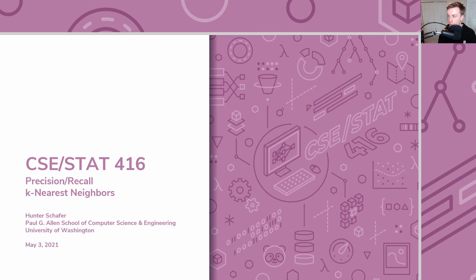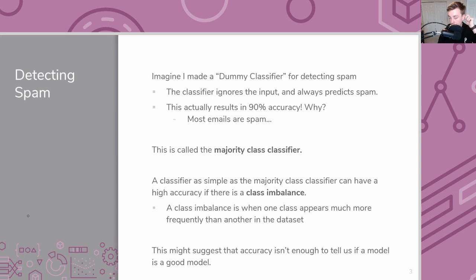Welcome back. In this video we're going to be talking in more depth about types of errors you might make in a classification setting — in particular, precision and recall. Even though we'll be talking about this in terms of classification, we're really starting our new case study on document retrieval. Precision and recall come up commonly in that context, so this video recaps those notions before we start the new case study.